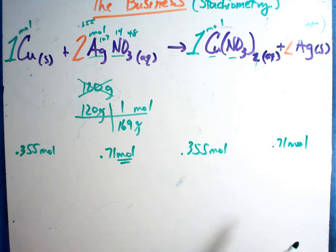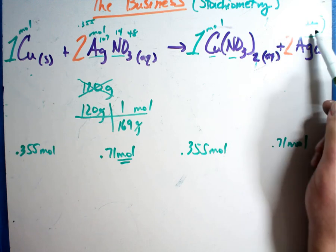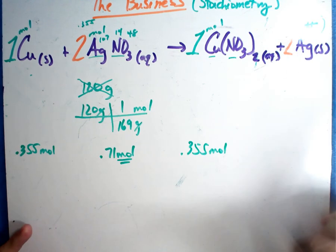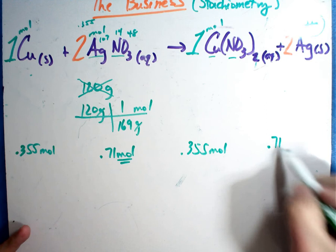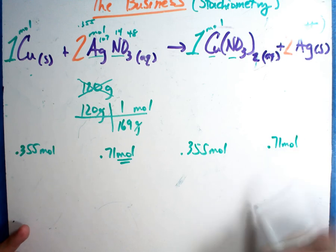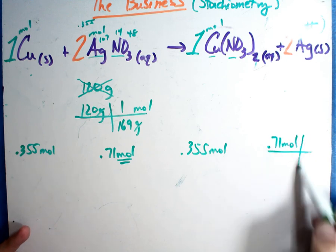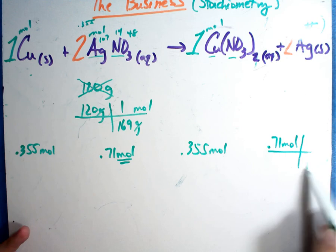And I have every answer. But we said we're selling silver. Now, I've never sold anything by the mole. I've never bought anything by the mole. So what if they want grams? That's fine. I'm going to sell silver. I'm going to change moles back to grams.